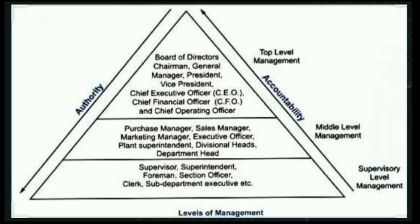Each level from the top to the lower level follows the hierarchy — the scalar chain. The topmost is the most powerful, followed by the middle, and then the supervisors. Authority flows downwards: the top level managers delegate their authority to the middle level management, and the middle level managers delegate authority to the supervisory level managers.